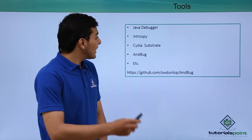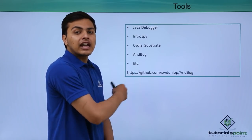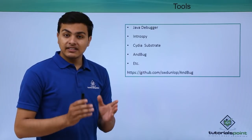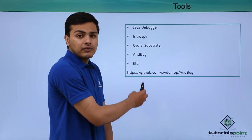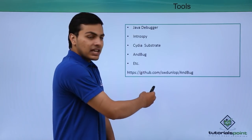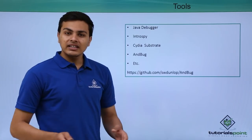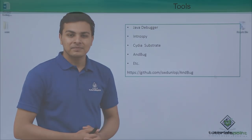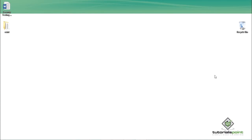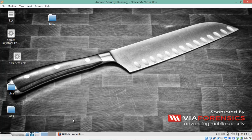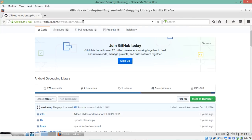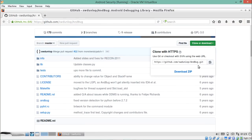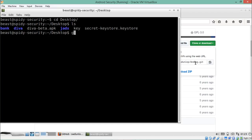There are lots of tools we can use to hook on a particular API, such as Java Debugger, IntroSpy, CDS Substrate, and AnBug. In this video we'll use a tool called AnBug, which you can download from their GitHub repository at github.com/swd-unlop/AnBug. Let's see how we can use AnBug to hook on a specific API.